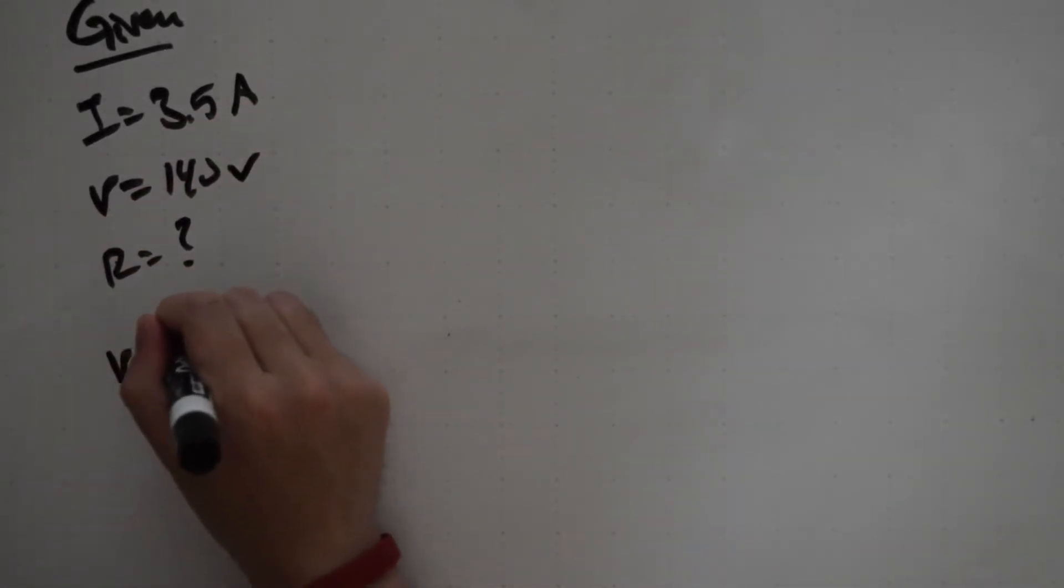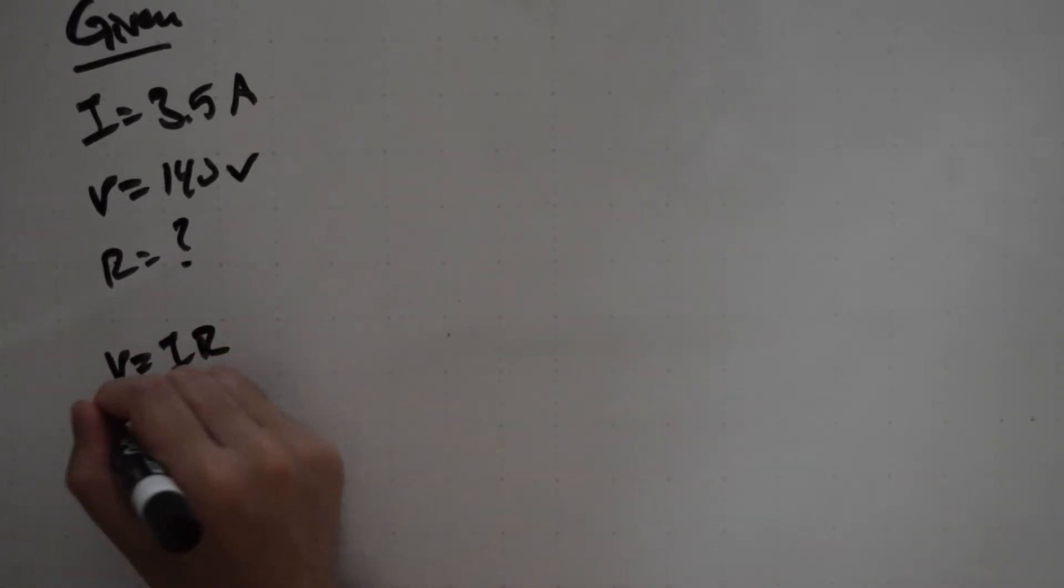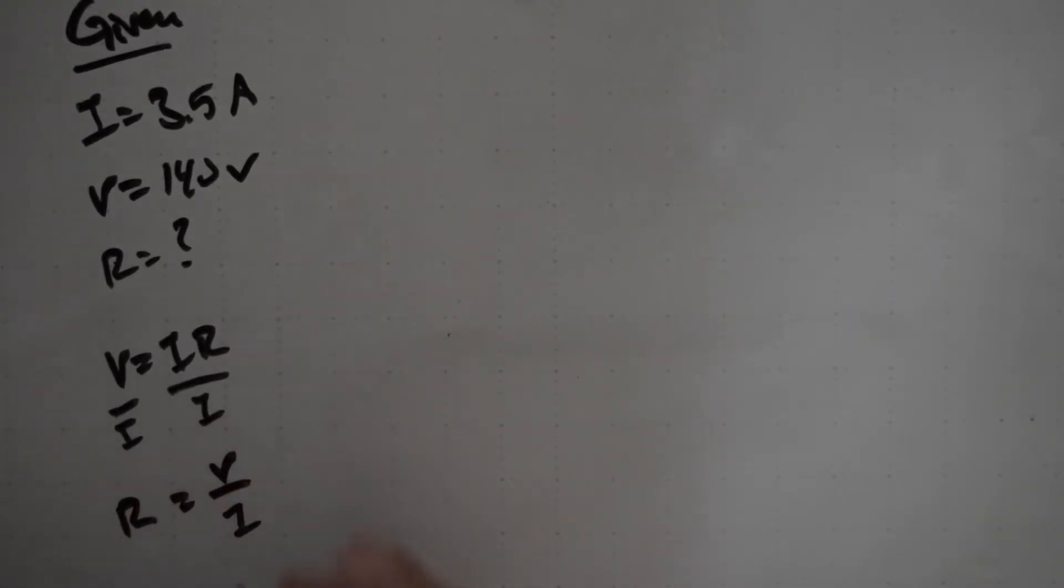Again, our Ohm's Law equation needs to be rewritten here. So we're going to divide both sides by I, which leaves us with R equals V over I.